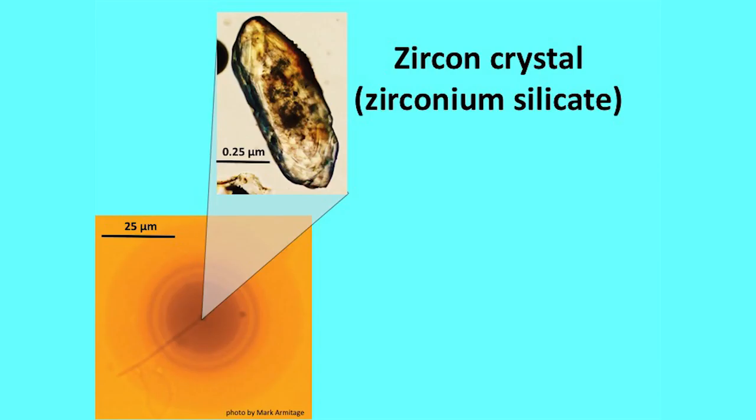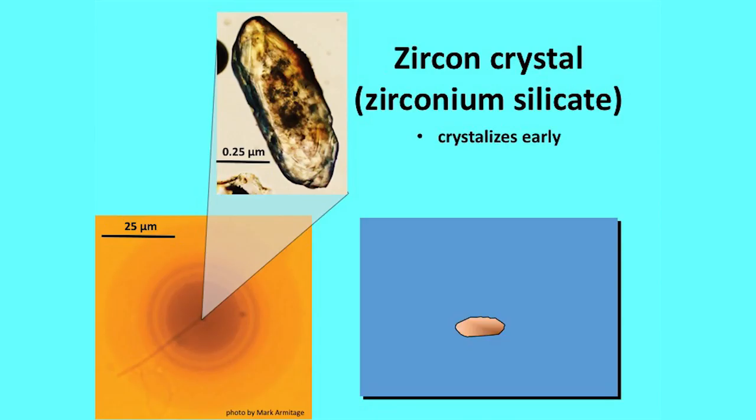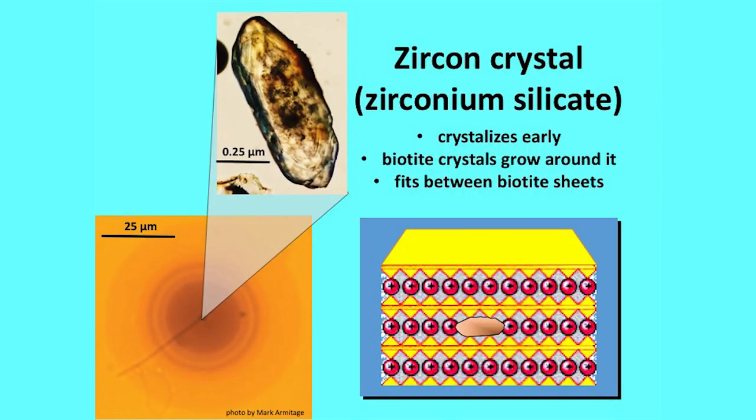A characteristic of that zircon mineral is that it is actually older than the biotite — it was already there before the biotite formed. The tiny little crystal is sitting there, usually in a molten condition, as the rock solidifies. This particular mineral has a very high melting point, so it sits there as a hard mineral while the rock is solidifying. When the mica crystallizes, it incorporates these zirconium crystals into the fabric of the mica, capturing them between the individual sheets.